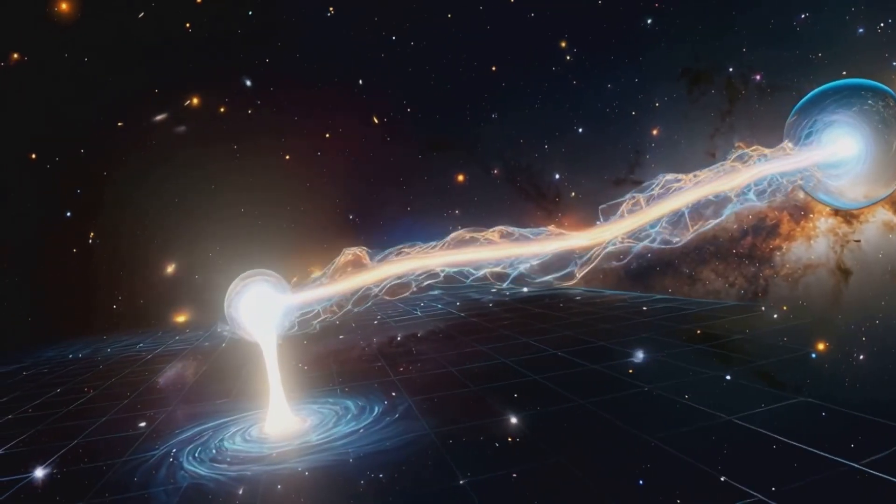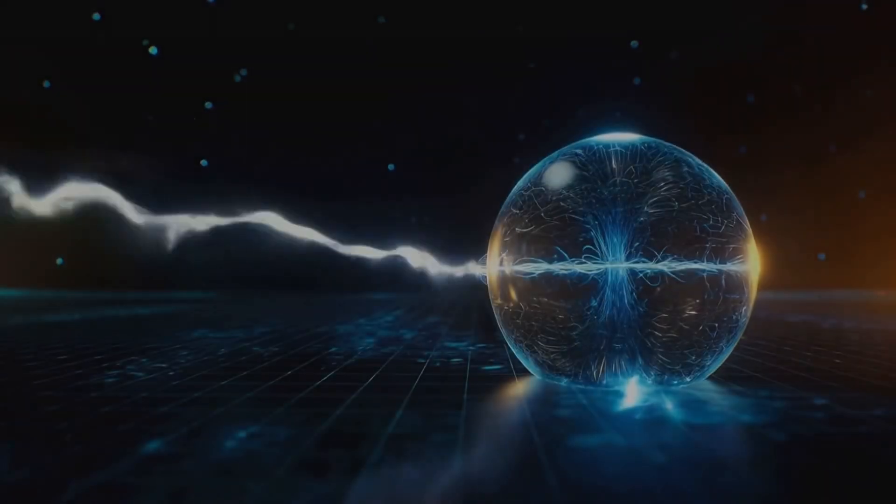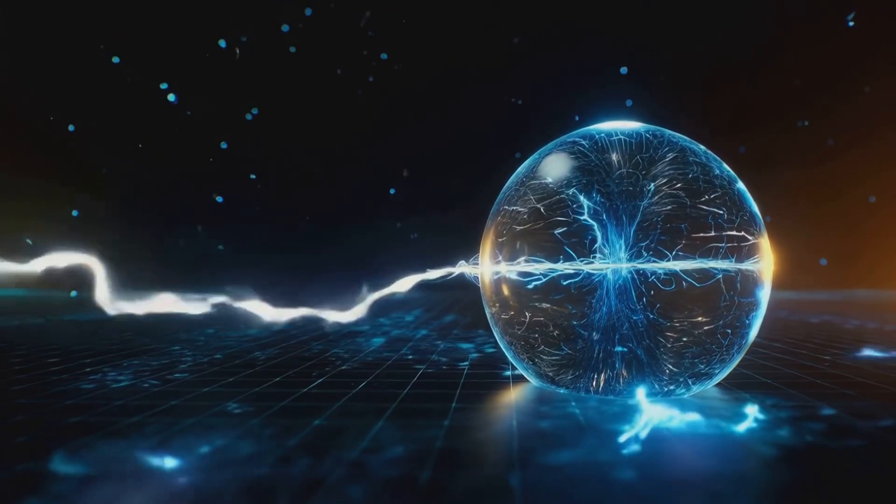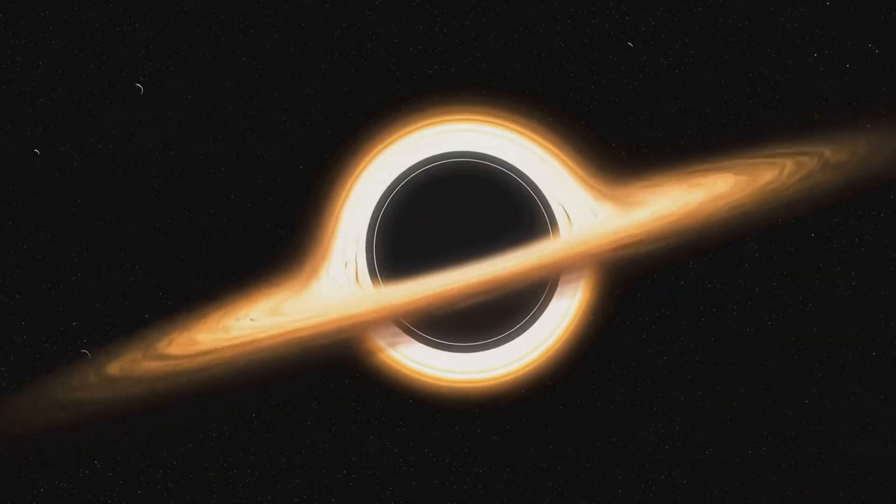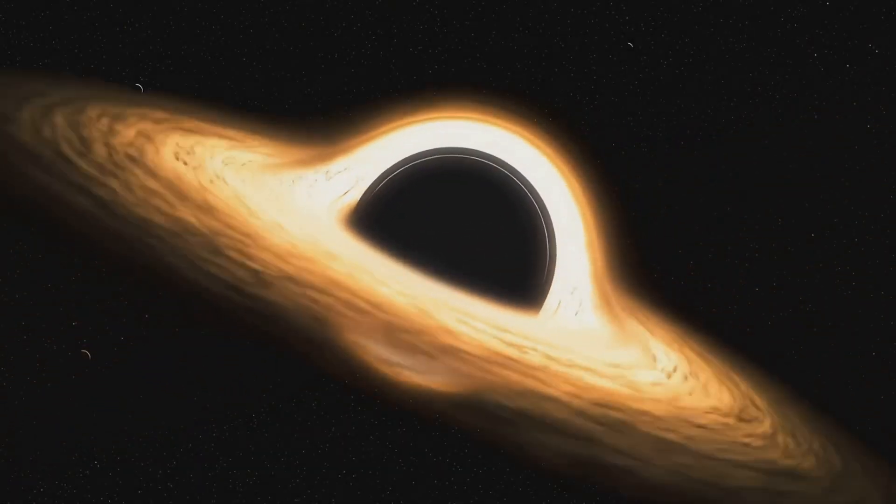The event horizon acts as a filter, a gatekeeper of information. It ensures that the amount of information within a given region of space never exceeds the information encoded on its boundary.